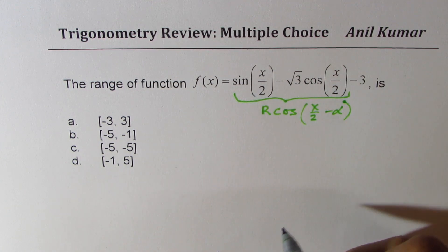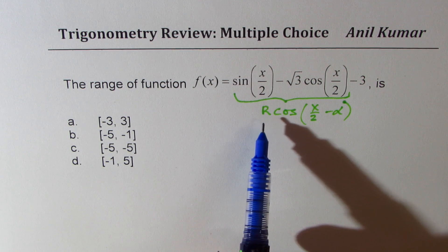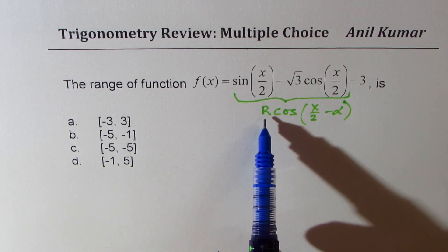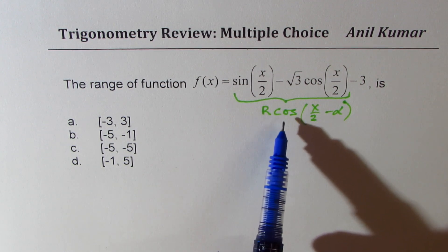If you do that, then we know the range will be minus 3 plus and minus R. That is how you could actually get the range. Now let's see how to write it in that form.